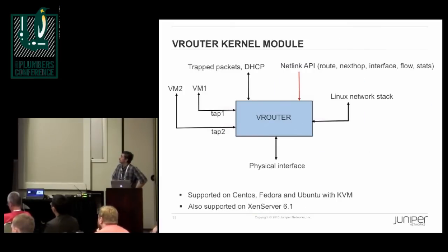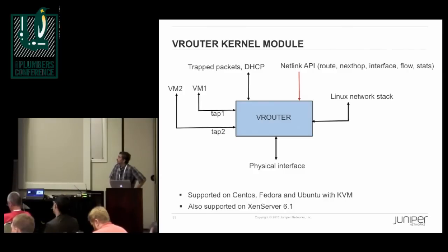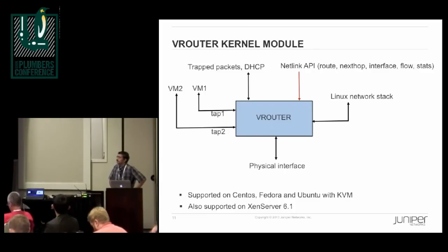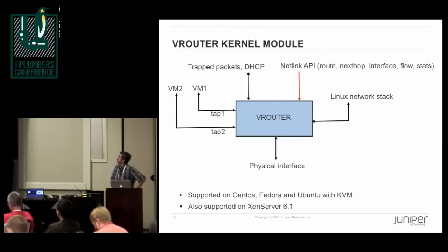This slide shows the APIs and interfaces that the vRouter module has. It talks to the physical interface and also the TAP interfaces to virtual machines. Any packet that should not be consumed by vRouter is sent to the Linux network stack using another interface. vRouter also handles some packets like DHCP — when the VM sends a DHCP request, the vRouter module sends it to user space and DHCP is satisfied from there. We also have a Netlink API that includes addition of routes, nexthops, new interfaces, getting statistics, adding flows, and things like that.